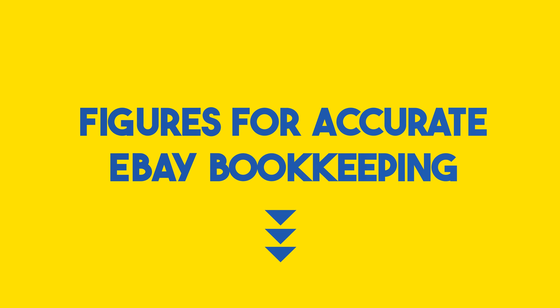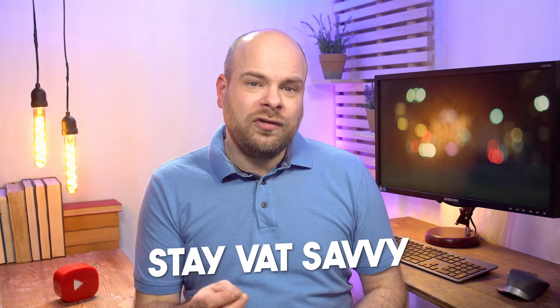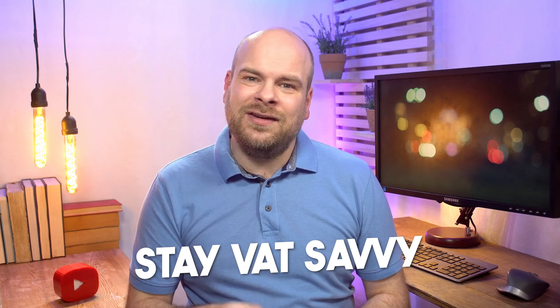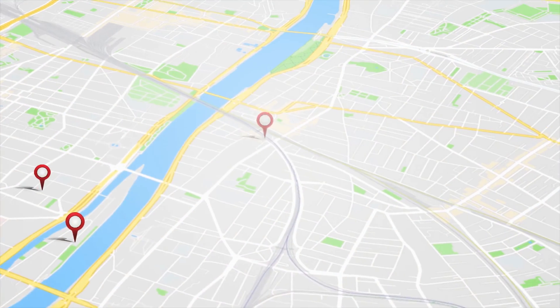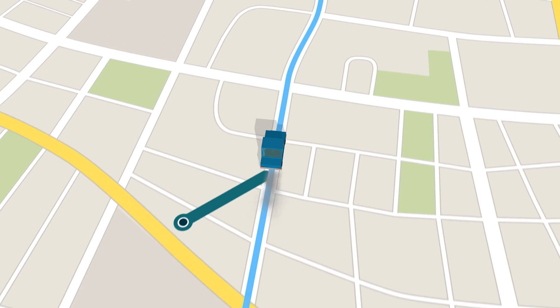But what figures do you actually need for spot-on eBay bookkeeping? You need three main ingredients: number one, sales broken down by destination country; number two, refunds also by destination country; number three, eBay fees. If you're based in the UK, stay VAT-savvy, especially when dealing with international sales — so keep an eye on those destination countries.